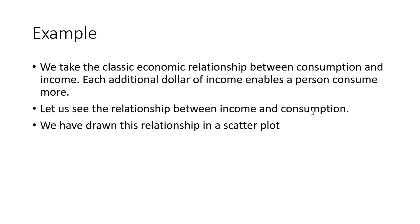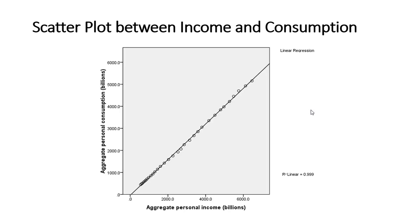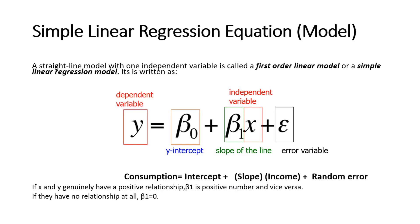We take a classic example of an economic relationship between consumption and income. Each additional dollar of income enables a person to consume more. We have drawn this relationship in a scatter plot: when aggregate personal income increases, aggregate personal consumption also increases. This is a perfect linear relationship shown by a straight line — this is very ideal. Now let us see the simple linear regression equation, or what we call the model.